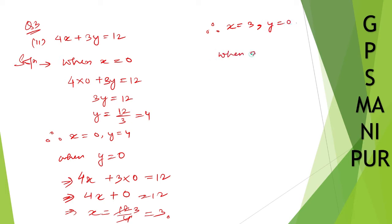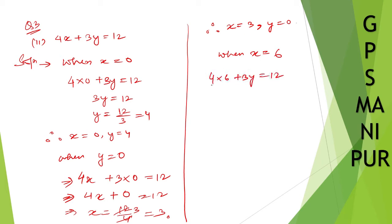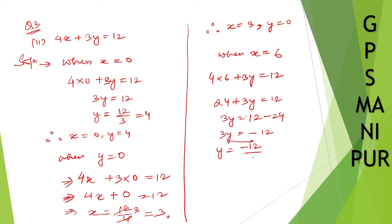Now when x is equal to 6, let us substitute. So 4 into 6 plus 3y is equal to 12. That gives 24 plus 3y is equal to 12. So 3y is equal to 12 minus 24, which is minus 12. Y is equal to minus 12 divided by 3, which is minus 4. So when x is equal to 6, y is equal to minus 4.